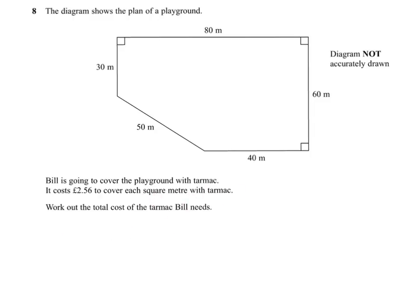First of all, we need to know the area of the playground in square metres, and then we simply multiply that answer by the cost of a square metre of tarmac, which is £2.56.